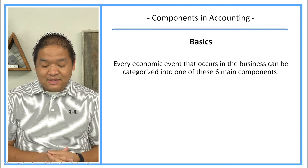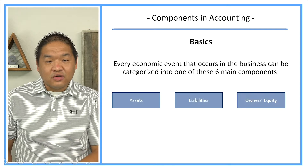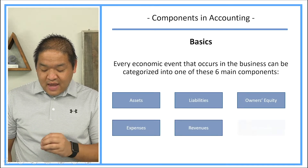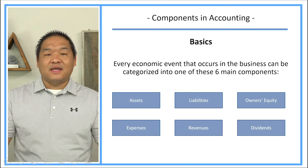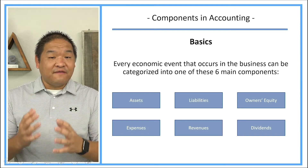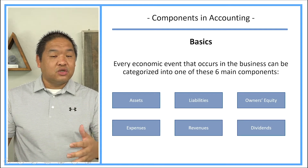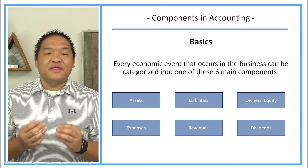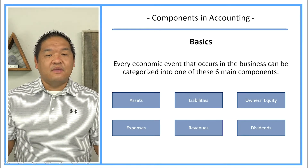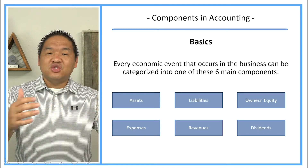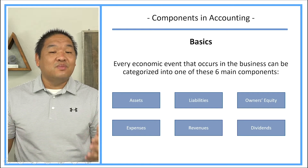Every economic event that occurs in the business can be categorized into one of these six components. The first one being assets, the second liabilities, then owner's equity, expenses, revenues, and dividends. Those are our six main components in accounting. If we have any type of transaction that actually affects the basic accounting equation and needs to be booked into the accounting information system, we have to pick which buckets we're going to classify that transaction into — usually two buckets at the same time, sometimes just one.